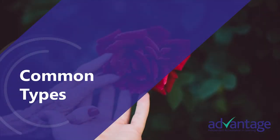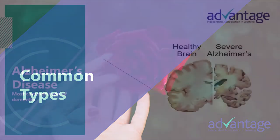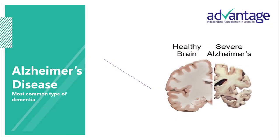Let's look at the common forms of dementia. Remember, dementia is a syndrome rather than the disease itself. Alzheimer's disease is the most common cause of dementia, first described by the German neurologist Alois Alzheimer as a physical disease affecting the brain. During the course of the disease, plaques and tangles develop in the structure of the brain, leading to the death of brain cells.